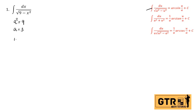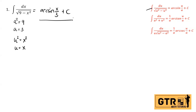Our u is x, since u squared equals x squared. And the derivative of u is dx. By direct substitution using the formula, the answer is arcsin(u/a), where u is x and a is 3. So the final answer is arcsin(x/3) + c.